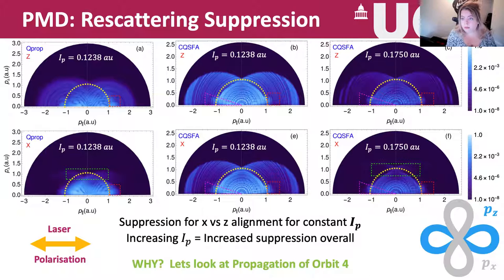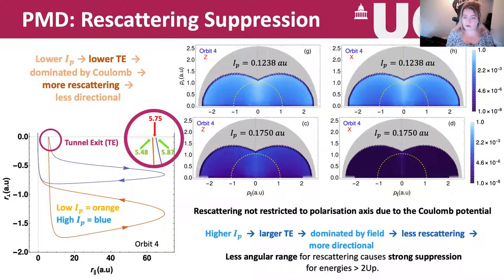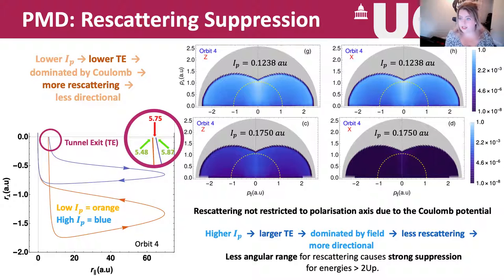What causes suppression? In our model we can deconstruct our orbits into singular paths and investigate each orbit individually. We find that orbit 4 — the rescattered orbit — is responsible for this suppression. Looking at orbit 4 alone with the two types of IP, the X suppression is always greater, and with a higher IP the X suppression is largest, consistent with what we saw in the full PMDs.